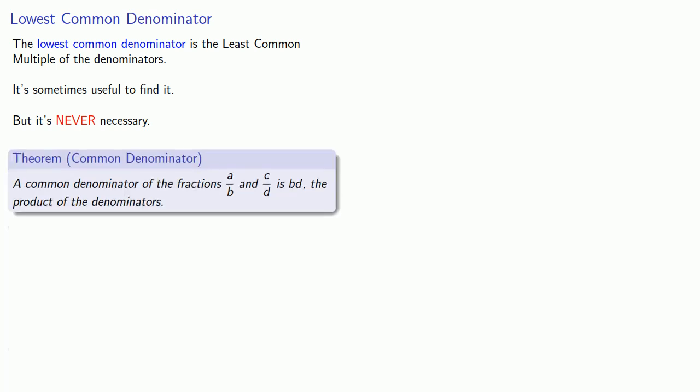Now sometimes when adding fractions, we talk about the lowest common denominator. And that is the least common multiple of the denominators. And it's sometimes useful to find it. But it's never necessary. And since life is hard enough, we're not going to waste our time finding lowest common denominators. Because all we need are common denominators. And so remember that we can always find a common denominator by multiplying the denominators together.